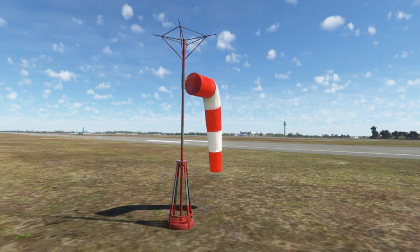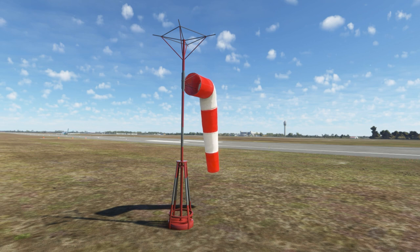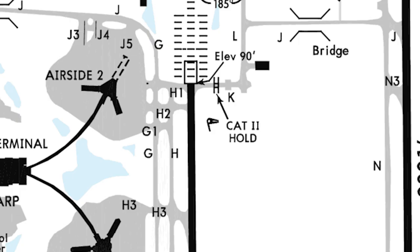Wind socks or wind indicators are depicted on the chart and are usually located near the ends of the runway.